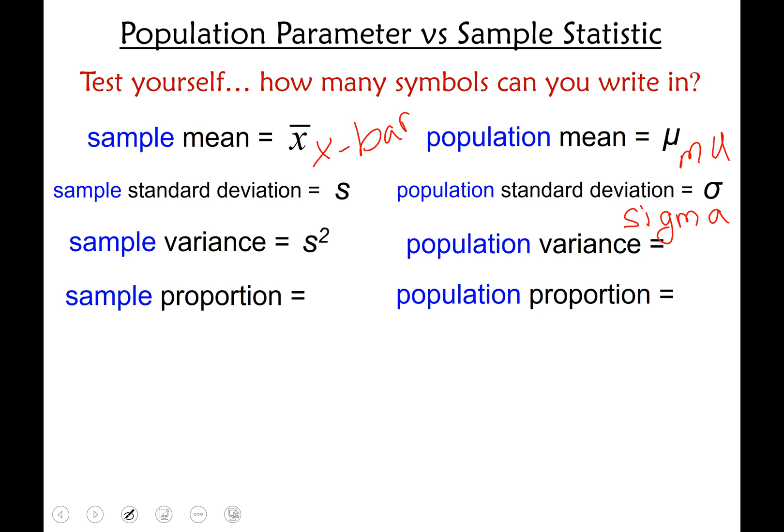Sample variance would be lowercase s squared. Population variance would be sigma squared. If you got a hundred percent so far give yourself a hand.